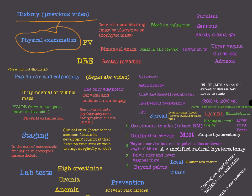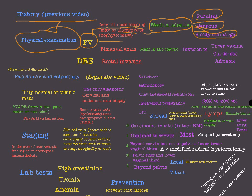Now let's move to the important physical examination. The key part here is the PV examination. On PV examination, you can see a cervical mass that bleeds. This cervical mass may be ulcerative or exophytic. You can see a cervical mass in macroscopic tumors, but in microscopic tumors you can't see the cervical mass. The mass will bleed on palpation, and the discharge will be purulent, serous, and/or bloody.